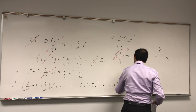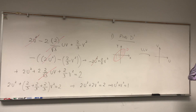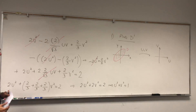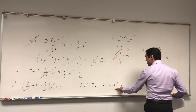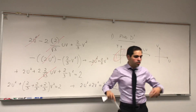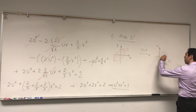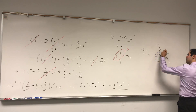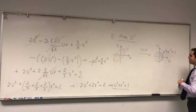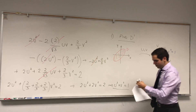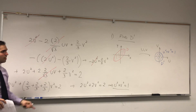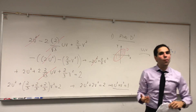In other words, u² plus v² equals 1 — much, much easier than the original equation x² minus xy plus y² equals 2. In fact, this is just a circle of radius 1. In other words, D, which was the inside of the ellipse, suddenly just becomes a disk of radius 1. And that's the whole point of change of variables.